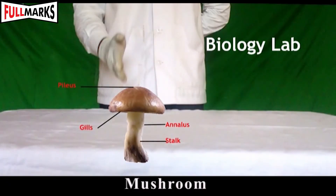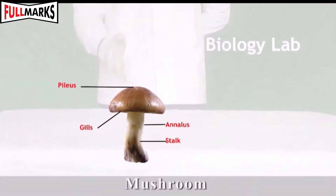2. Agaricus. Characteristics of Agaricus: Agaricus is commonly called mushroom. It is non-green. It has a stalk and cap-like structure with spores in it. The spores germinate to form mycelium.